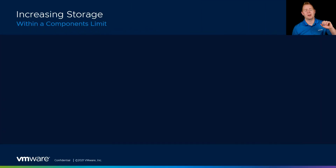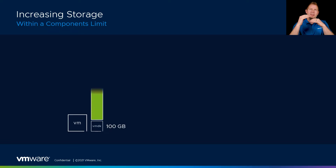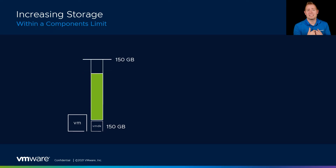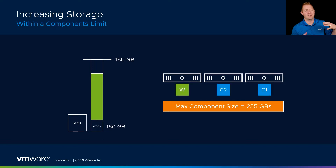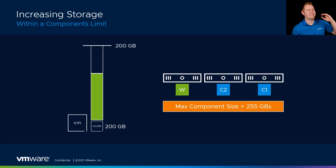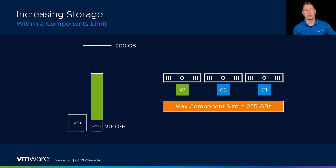The first example is inside our component limit. Let's say we've got our VM that's got a 100 gig VMDK and it's starting to fill up, and we decide we want to increase this storage space. Our max component size is 255 gigs. So if we increase it to 150 gigs, it doesn't exceed that amount — we can still continue using our existing components; we don't need to create a new object. If we go to 200 gigs, exact same situation. Nothing's happening in the backend. We don't need to make any changes in the environment or worry about storage consumption. We're just using it inside those existing components.